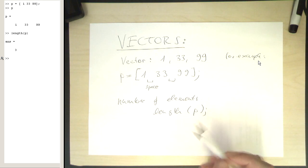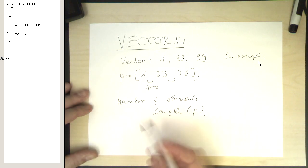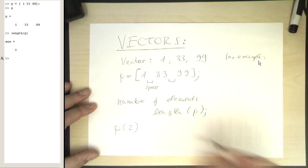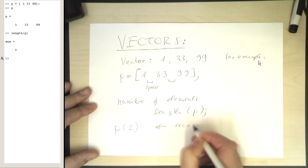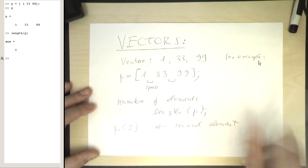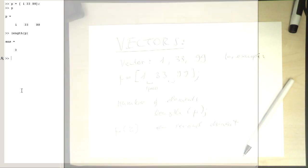So now imagine we would like to access one of these elements in a vector. If we write P of 2, this gives us the second element. Let's try this out.